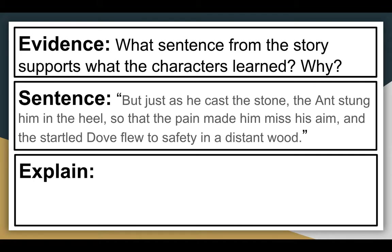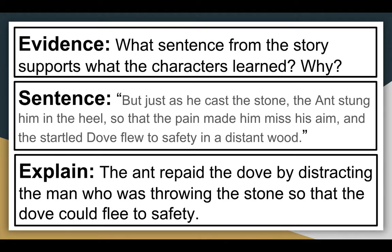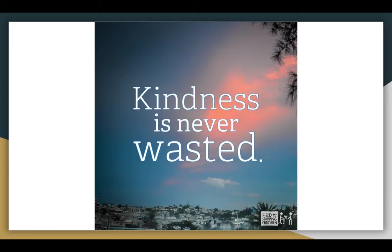Here is a sentence from the story that correlates to kindness: 'But just as he — meaning the man with the stone — cast the stone, the ant stung him in the heel, so that the pain made him miss his aim, and the startled dove flew to safety in a distant wood.' Now that we have a quote from the text, we don't want to just let it speak for itself — we need to explain why. We're going to paraphrase it into our own words and connect it to the theme. The ant repaid the dove by distracting the man who was throwing the stone, so that the dove could flee to safety. And then we can really see that the theme of this story is: kindness is never wasted.